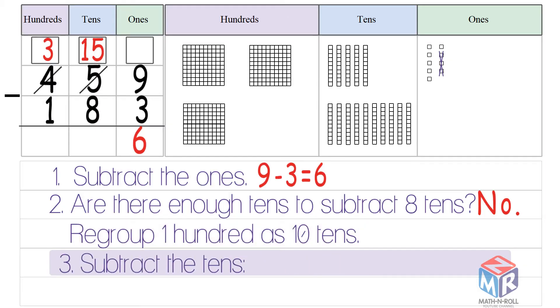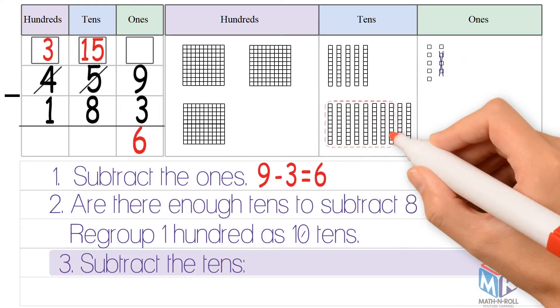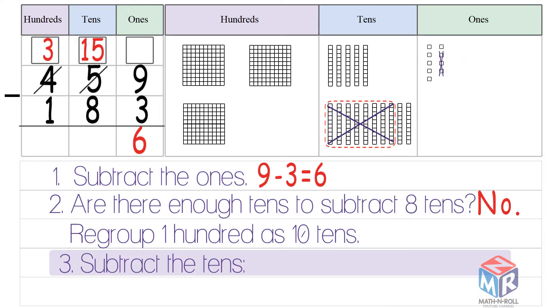Subtract the tens. 15 minus 8 is equal to 7.